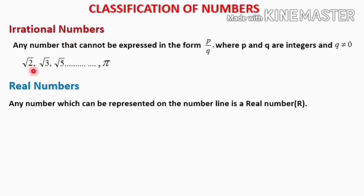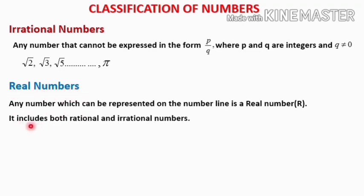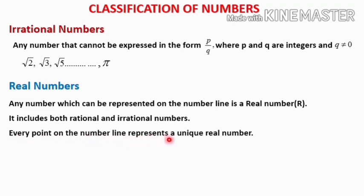At the end of this chapter, you will study how to represent irrational numbers — like root 2, root 3, root 5 — on the number line. Both rational and irrational numbers can be represented on a number line. The definition of real numbers: any number which can be represented on the number line is a real number. Real numbers include both rational and irrational numbers. Every point on the number line represents a unique real number.